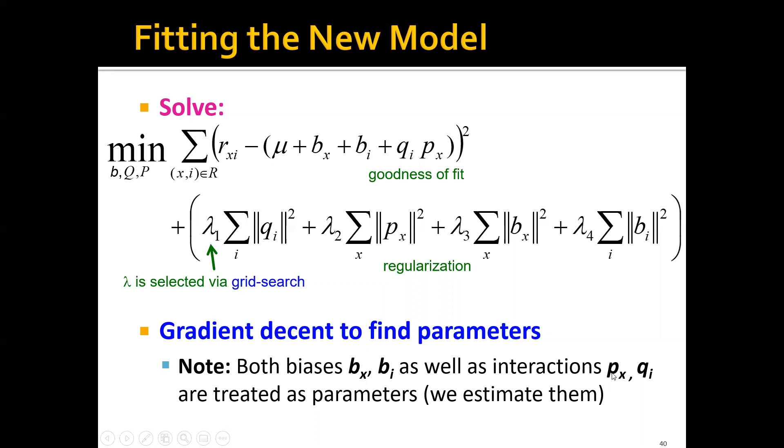and the interaction or the latent vectors, px and qi, they are all treated as parameters. We're trying to estimate them by minimizing these objective functions in the training dataset.